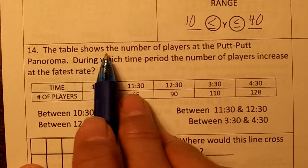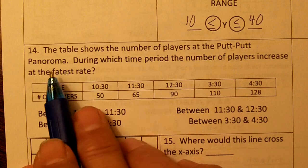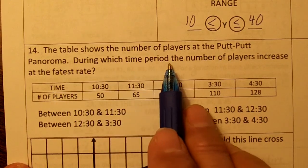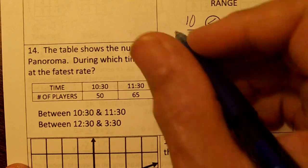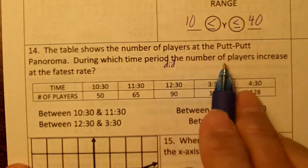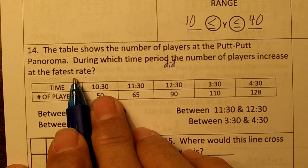Number 14, the table shows the number of players at the Putt-Putt Panorama during the time period. During which time period did the number—it should have a 'did' here—did the number of players increase at the fastest rate? Alright.